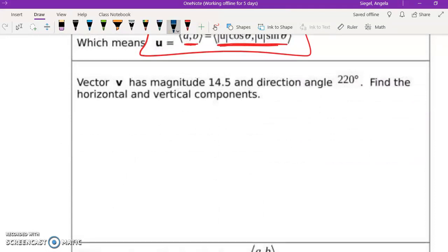Okay, so vector V has a magnitude of 14.5 and a direction angle of 220. So we need to find the horizontal A and vertical components B. So basically that's what we're doing. So I know that V is equal to 14.5, and I know that theta is equal to 220 degrees. Okay, so I'm going to go ahead and sketch a picture really quickly.